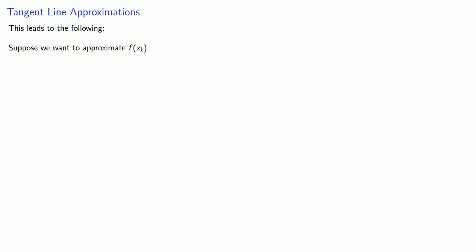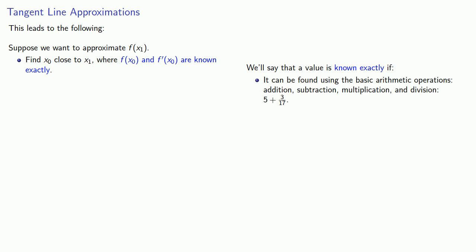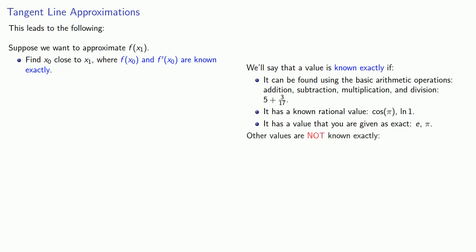This leads to the following idea: suppose we want to approximate a function value. What we want to do is find an x₀ close to x₁ where both the function and the derivative are known exactly. For our purposes, a value is known exactly if it can be found using the basic arithmetic operations — addition, subtraction, multiplication, and division — for example, (5+3)/17. Or it has a known rational value, for example cosine of π or log of 1. Or it has a value that you are given as exact, like e or π.